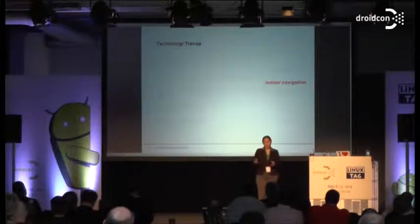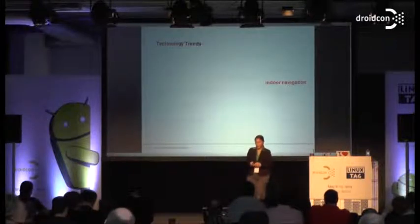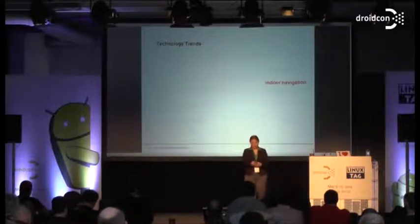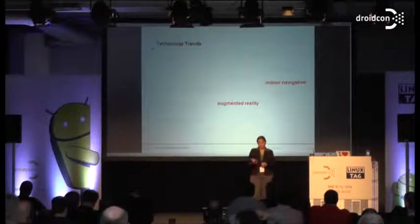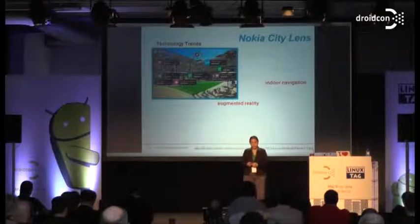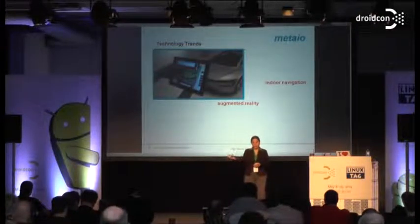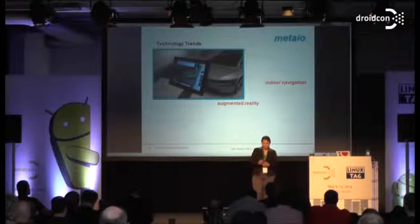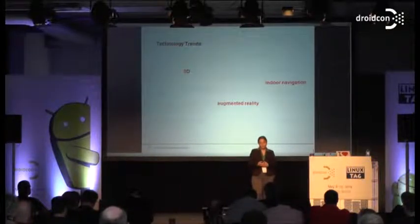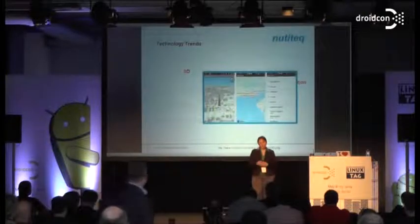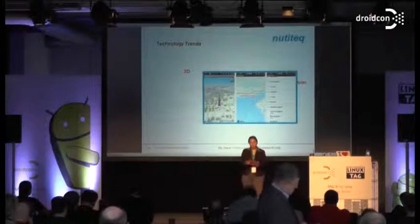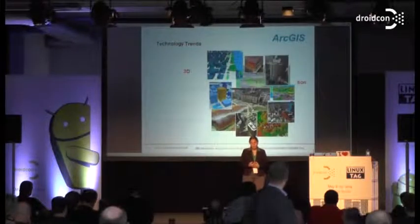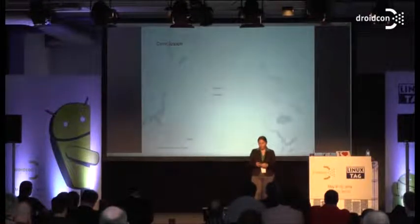What are the emerging technologies? For example, indoor navigation — there are some providers at this conference that offer indoor navigation, but mostly people don't use it yet, so there's still a lot of development to be done. And then augmented reality — for example, Nokia City Lens uses augmented reality to show points of interest. AR is also used, for example, to show the future color of a car. And 3D is also an important trend — for example, Bentley can render 3D buildings on a mobile device, and ArcGIS has CityEngine where you can build such buildings.